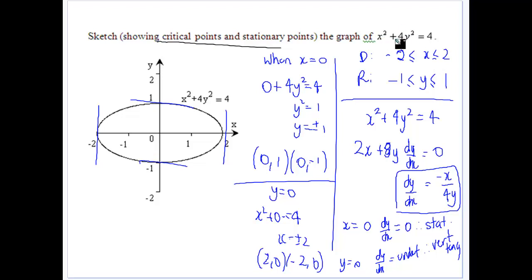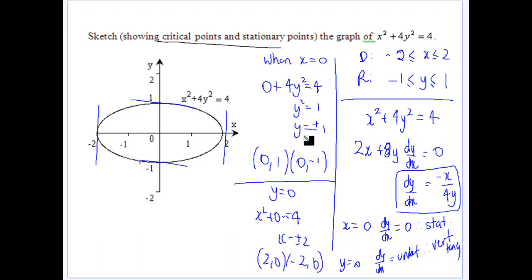If x is 0, then y squared has to give values between minus 1 and 1, so there's a restriction on y because we're subtracting. For critical points: where x equals 0, y equals plus or minus 1. Where y equals 0, x equals plus or minus 2. So the curve goes through those four points.